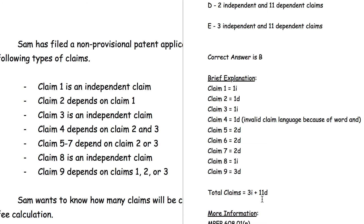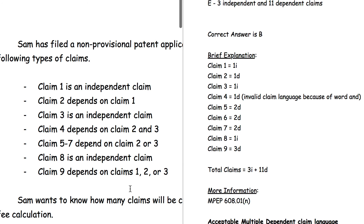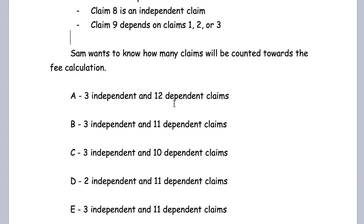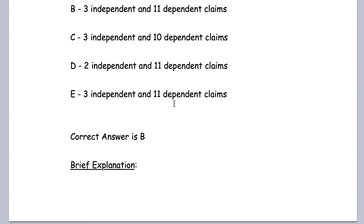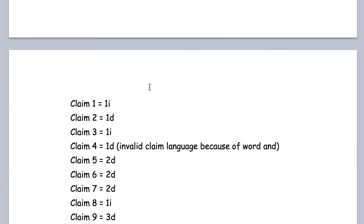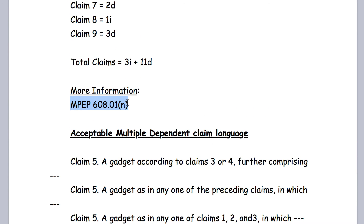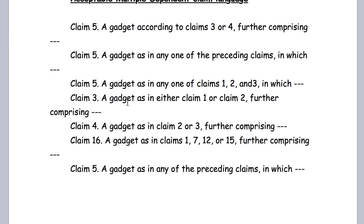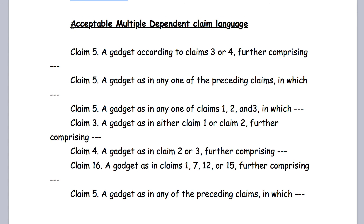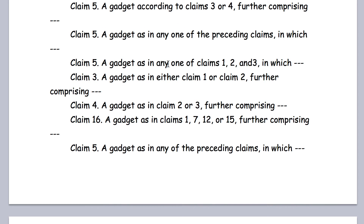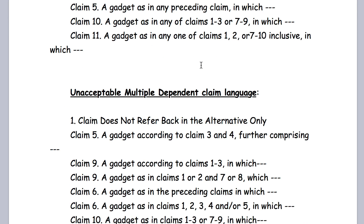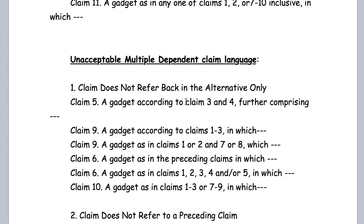That's your answer choice A. Answer choice B is 3 independent and 11 dependent — so 3 independent and 11 dependent claims. Now here is the MPEP section. You can search for it or go to MPEP 600, then click on 608.01. During the examination, you can do that, and it will take you directly to this section. It talks about what is acceptable — for example, 'any one of the claims' — and what is unacceptable, such as 'Claims 1 and 2' or 'Claims 3 and 4' with an 'and'.